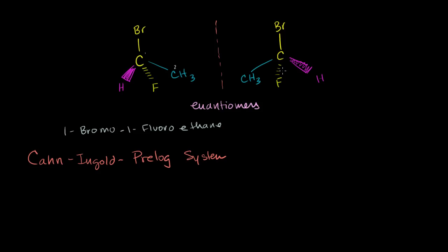Really, the hardest part is to just visualize rotating the molecules in the right way and figuring out whether it's a left-handed or right-handed molecule. We're going to take it step by step. So the first thing you do in the Cahn-Ingold-Prelog system is to identify your chiral molecule. Here it's pretty obvious — it's this carbon right here. It is bonded to four different groups.